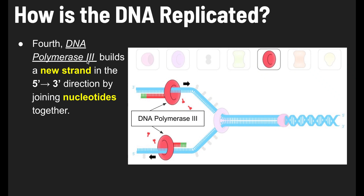Step four: DNA polymerase III — named that because there's more than one DNA polymerase — builds a new strand, moving in the five prime to three prime direction, by joining nucleotides together. DNA polymerase III is adding nucleotides, and it moves toward the replication fork on one strand and away from it on the other, because DNA is anti-parallel.